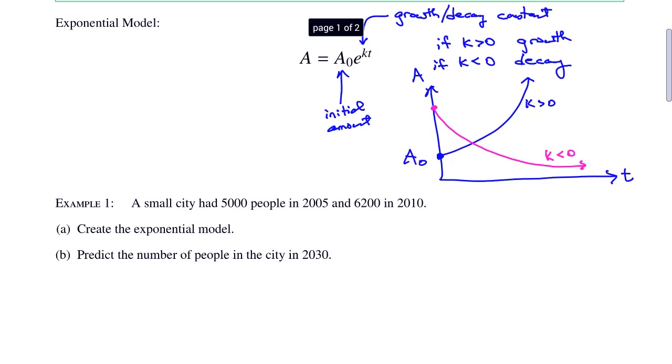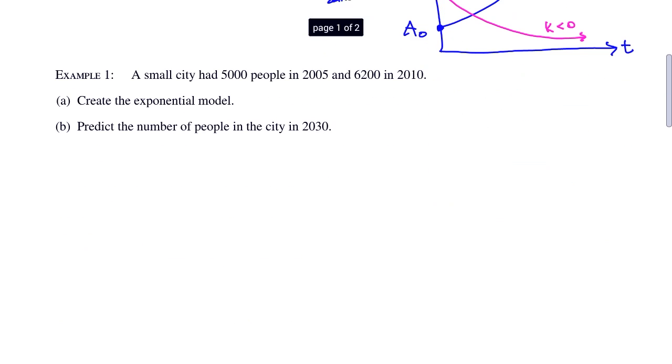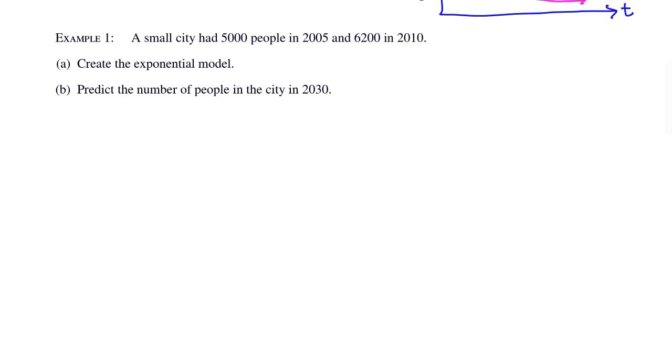Now recall that we use exponential models to model things like population growth and radioactive decay. Let's look at example one. A small city had 5,000 people in 2005 and 6,200 people in 2010. First, create the exponential model and then predict the number of people in the city in the year 2030.